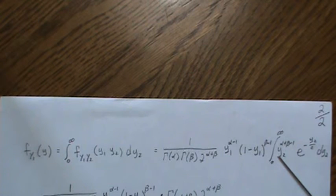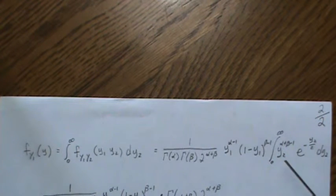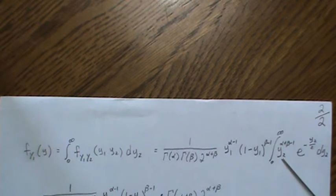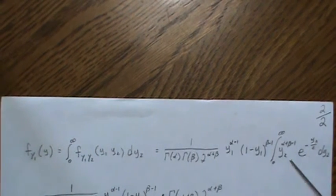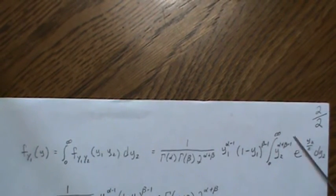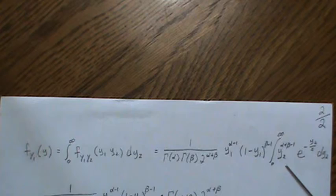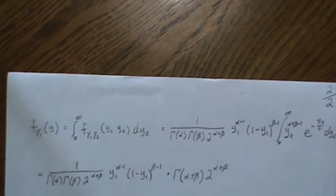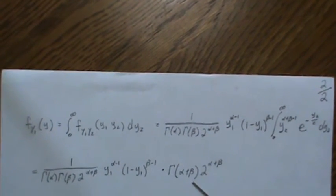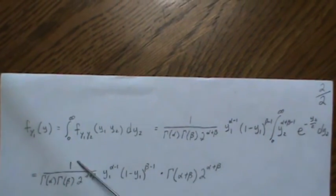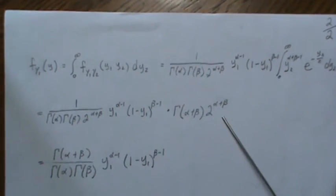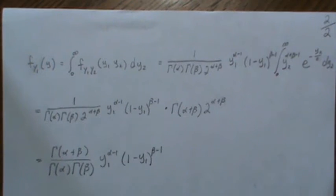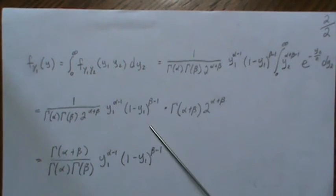Now this right here is another gamma distribution. And so if we had the constants out front that normalize this, this would integrate to one. But since we don't, then it integrates to those constants, which is this. So now we put this on top of that, the twos cancel, and we're left with this distribution here, which is a beta(α, β).